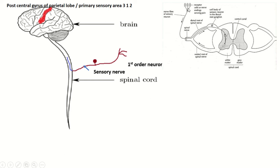The terminal portion of the peripheral process is converted into a receptor. They receive general sensation — pain, touch, temperature, vibration — and this information is carried by the peripheral process, then the central process. The central process transmits this information to the brain. So this portion of the afferent fiber is also known as the sensory nerve.